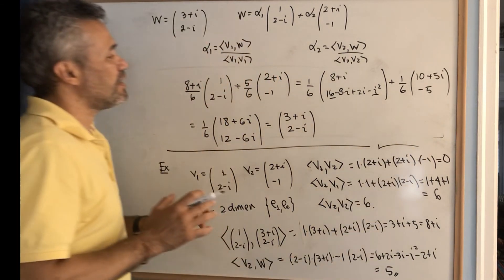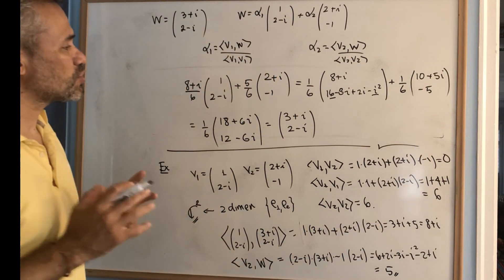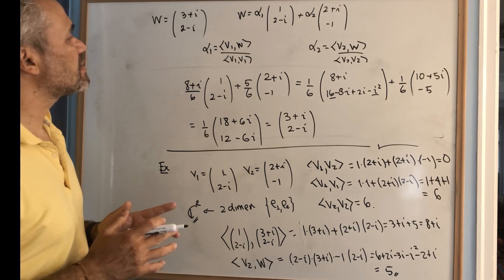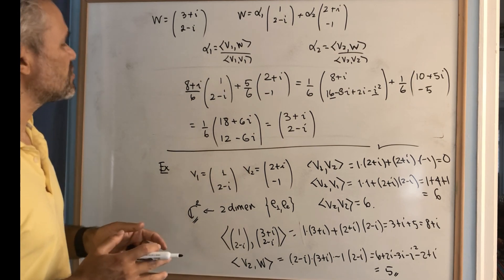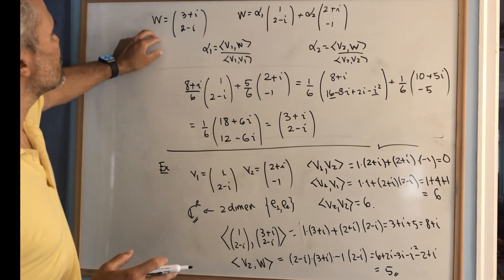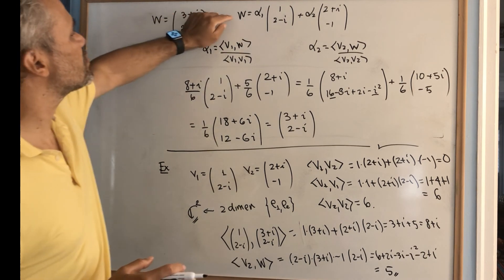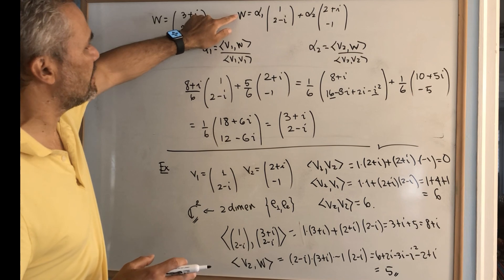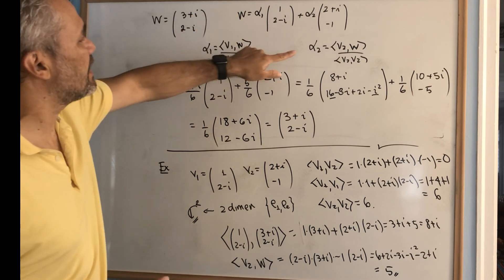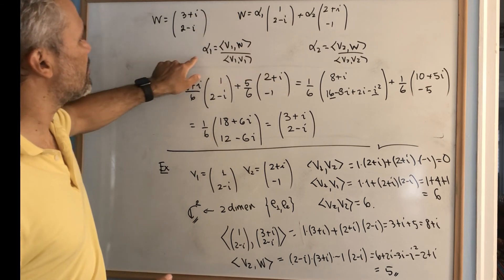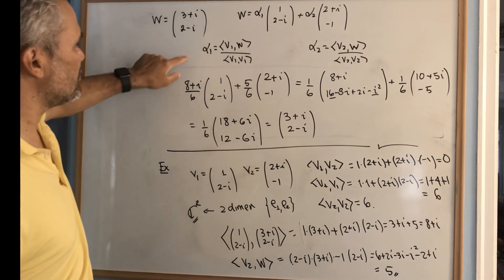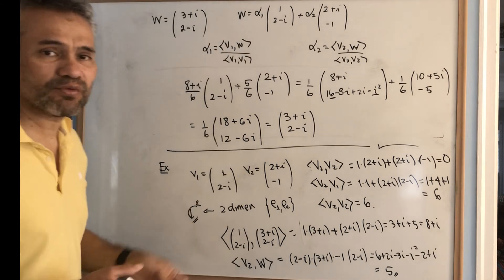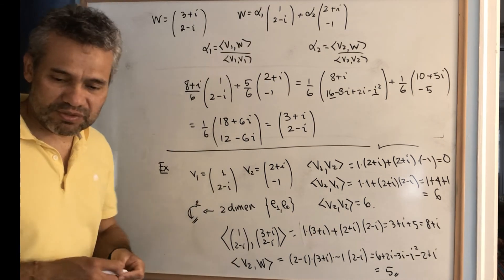The result simplifies to (1/6)·(18, 12−6i) = (3+i, 2−i), which is exactly the vector w. This confirms the calculation. Having an orthogonal set of linearly independent vectors is very useful because it allows us to easily write any vector in its span — we just need to compute some dot products rather than solving a system of equations.